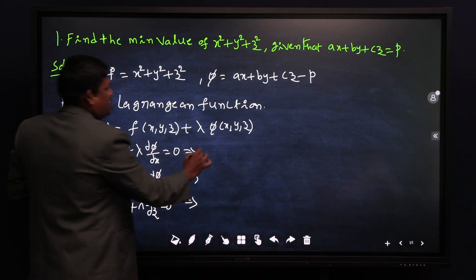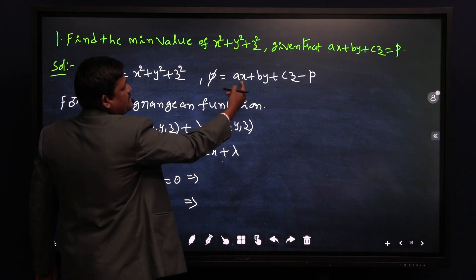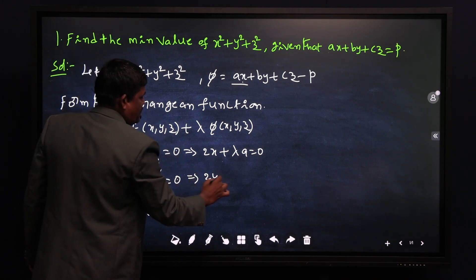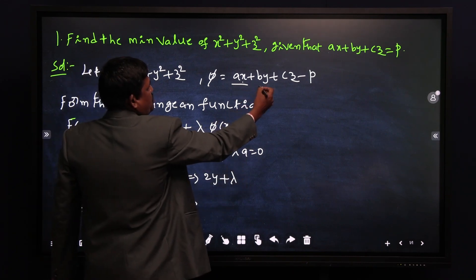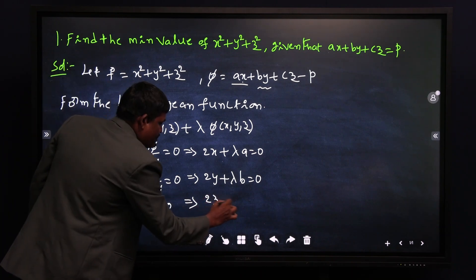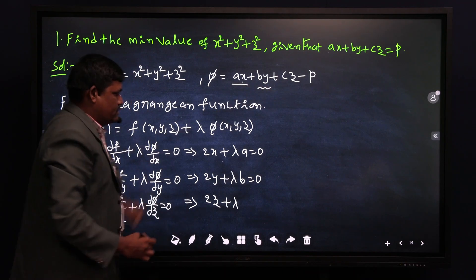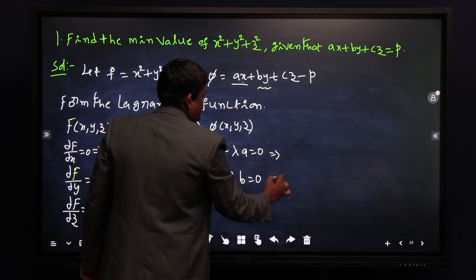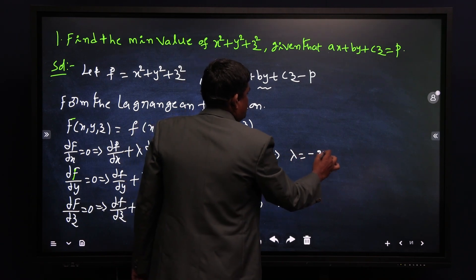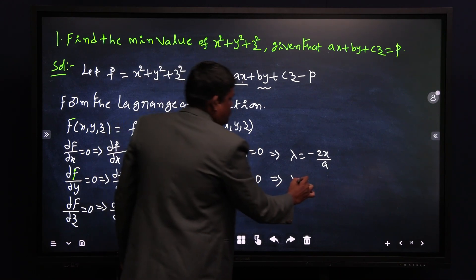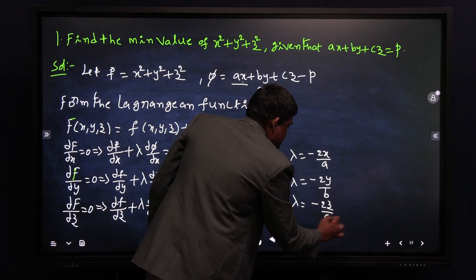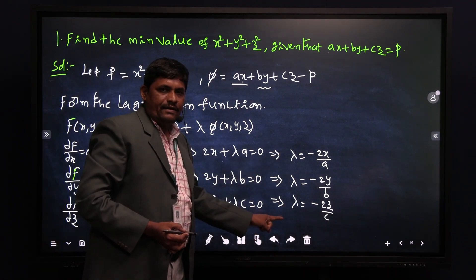Computing the partial derivatives: ∂f/∂x + λ·∂φ/∂x gives 2x + λa = 0. Similarly, ∂f/∂y + λ·∂φ/∂y gives 2y + λb = 0. And ∂f/∂z + λ·∂φ/∂z gives 2z + λc = 0. From these, we find λ = −2x/a, λ = −2y/b, and λ = −2z/c.